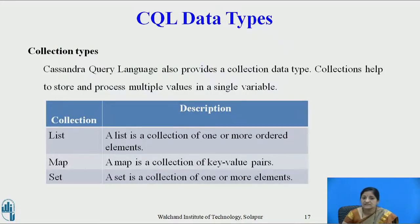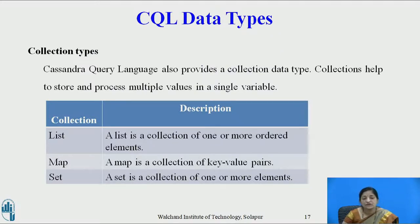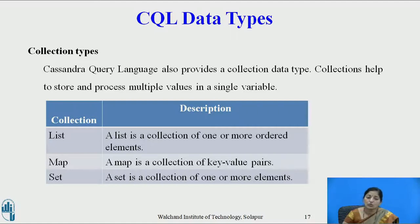Now we will move on to collection types. CQL also provides collection data types. Collections help to store and process multiple values in a single variable. There are three types of collections: List — a collection of one or more ordered elements; Map — a collection of key-value pairs; and Set — a collection of one or more elements where ordering is not mandatory.